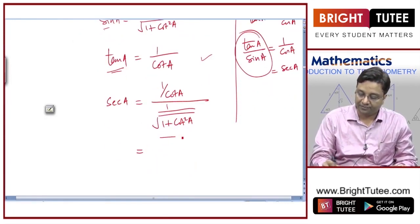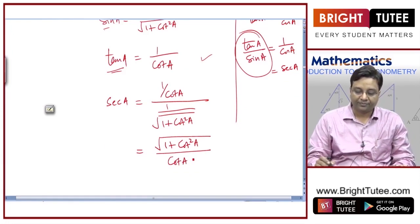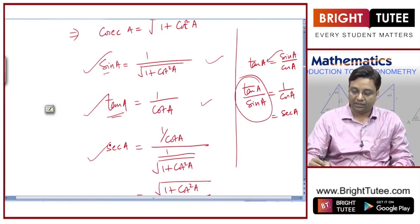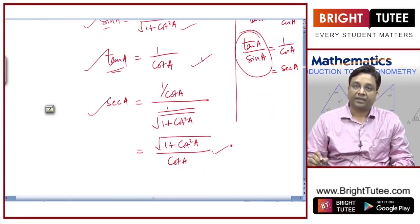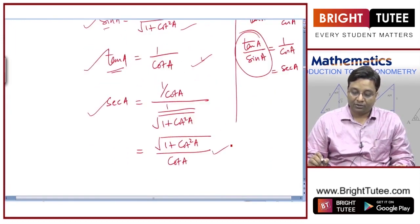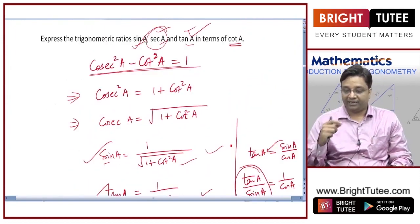Simplifying, secant a can be written as square root of one plus cot squared a divided by cot a. So I have written all three trigonometric ratios — sine a, tan a, and secant a — in terms of cot a.